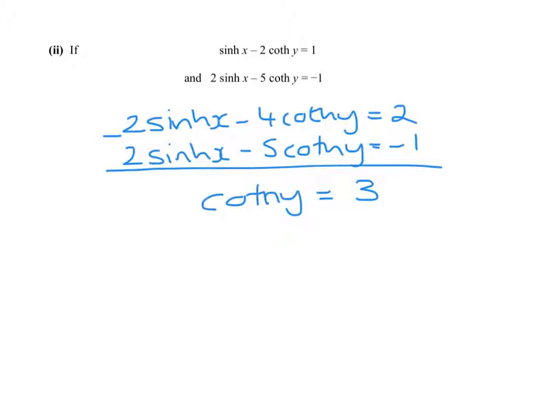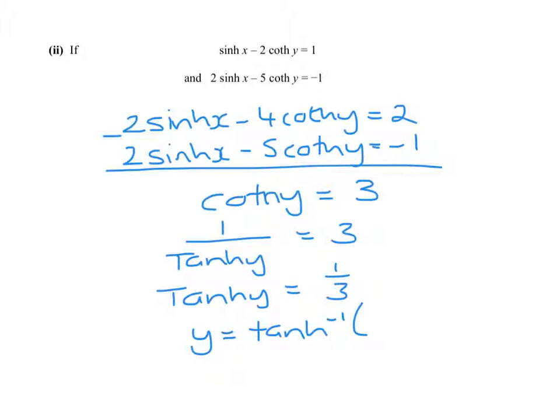And we know that coth is 1 over hyperbolic tan. So we have that. And y is the inverse of 1 third. Using our answer to part 1, we have 1 half ln 1 plus x divided by 1 minus x. So that's 1 half ln 2.